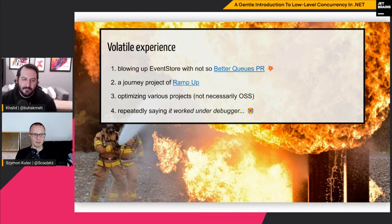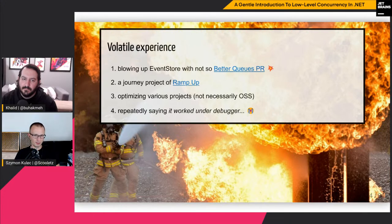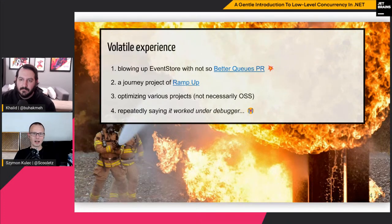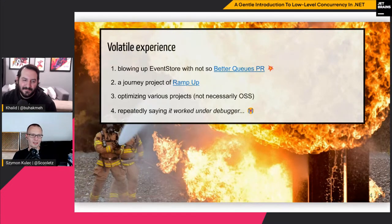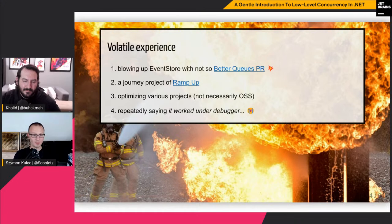The second experience, a long-running one, was a journey project called RampUp. It was based on AERON, a messaging framework you can use in Java and C++. As I was building RampUp, AERON.NET was announced, so the journey stopped. But if you're interested in low-level concurrency and how to use volatile or interlocked, RampUp is worth looking at. The third experience was optimizing various projects. And the last, which quite often happens when you deal with interlocked or volatile, was just sobbing and saying 'it worked under the debugger.'